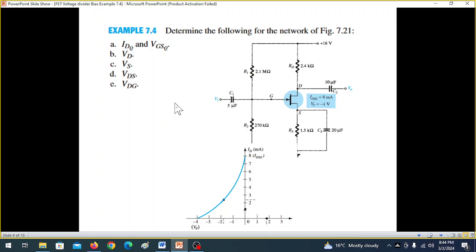Now let's see the example now. The example 7.4 says determine the following for the network. So this is the network, and we have to find these four or five items. We'll do one by one. First of all it is saying IDQ and VGSQ.